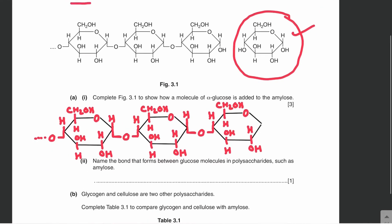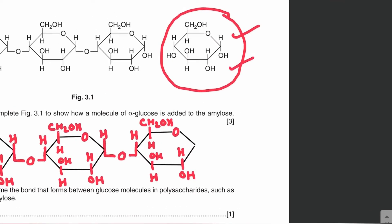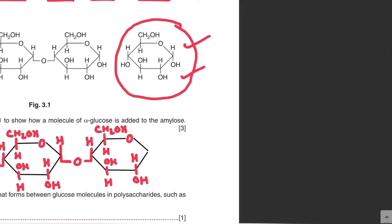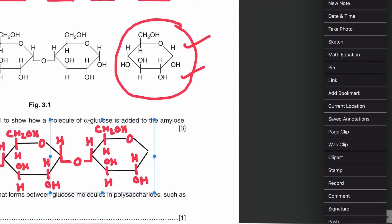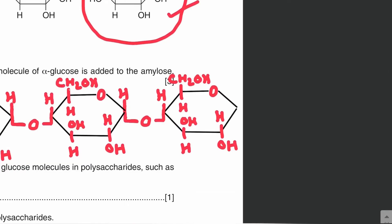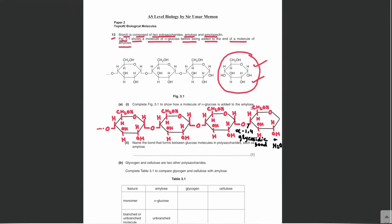We have drawn this part of the amylose. Now we have to show the joining of the alpha glucose. When the alpha glucose joins, a glycosidic bond is formed — an alpha 1-4 glycosidic bond, because this is carbon number 1 and this is carbon number 4. We can label this as the alpha 1-4 glycosidic bond, and we can also show the water molecule released in the condensation reaction.